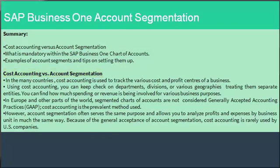To summarize: cost accounting versus account segmentation in SAP Business One. In many countries, cost accounting is used to track various cost and profit centers of a business. Using cost accounting, you can keep track of departments, divisions, or various geographies, treating them as separate entities to find how much spending or revenue is involved for various business purposes. In Europe and other parts of the world, segmented chart of accounts is not considered GAAP, so cost accounting is the prevalent method. However, account segmentation often serves the same purpose, allowing you to analyze profits and expenses by business units. Due to the general acceptance of account segmentation, cost accounting is rarely used by companies located in the US. Thank you.